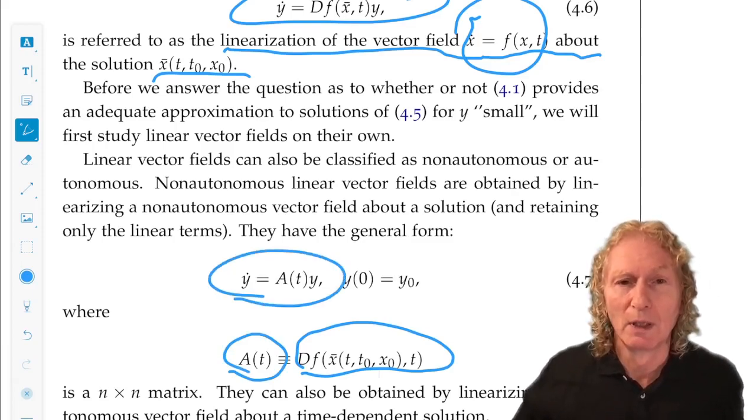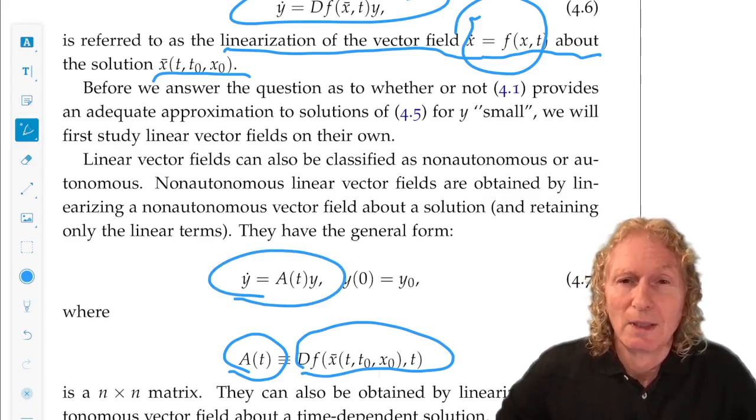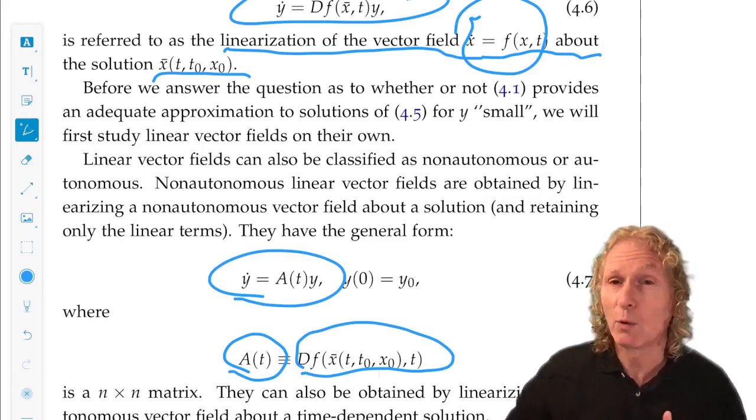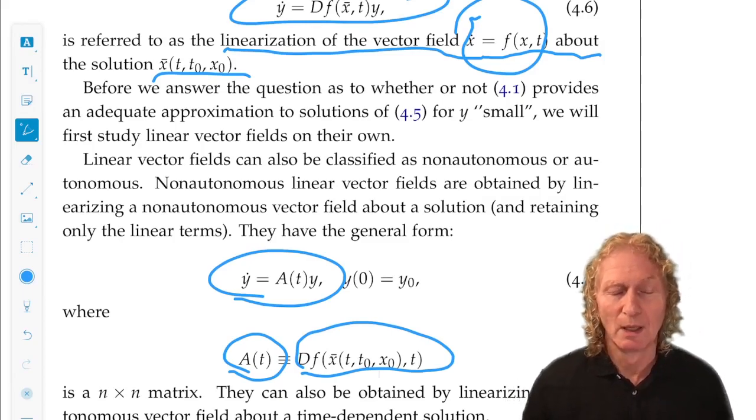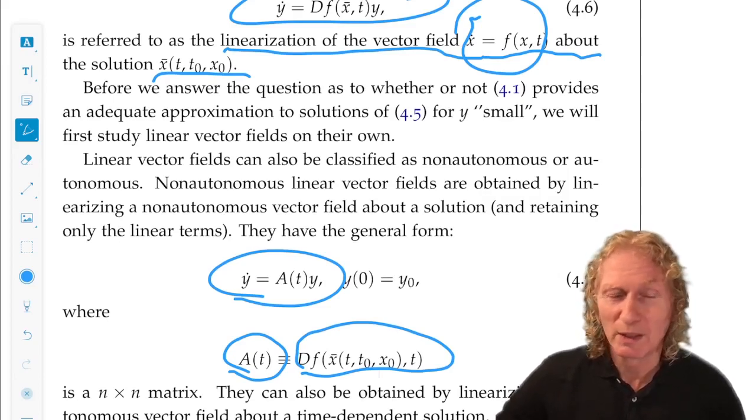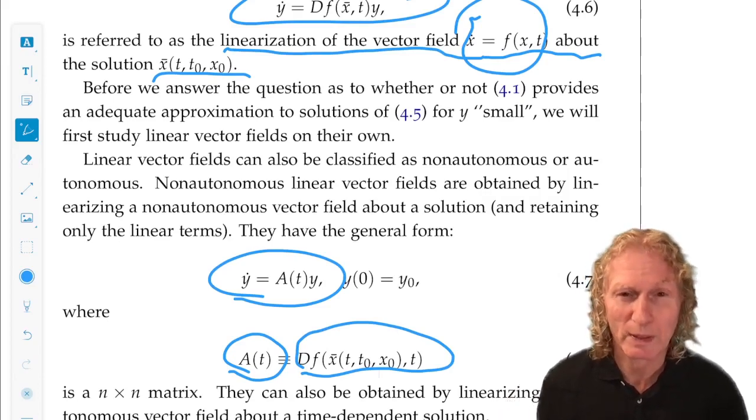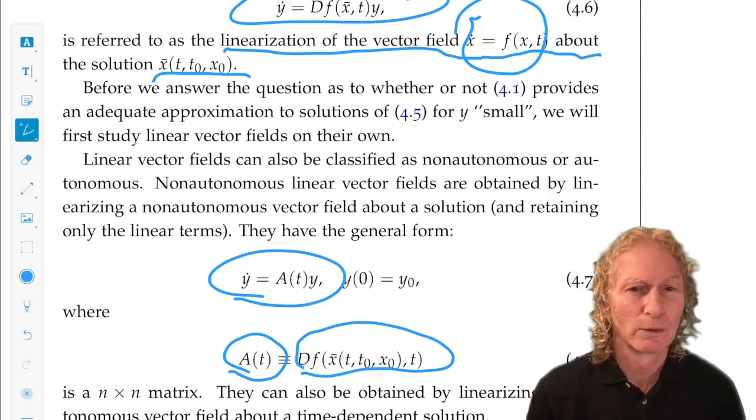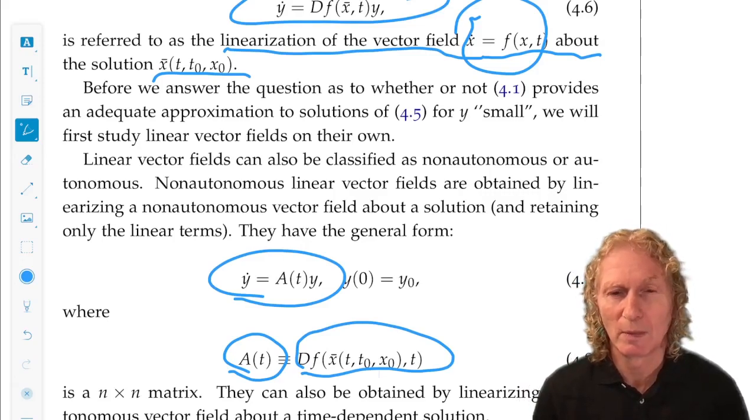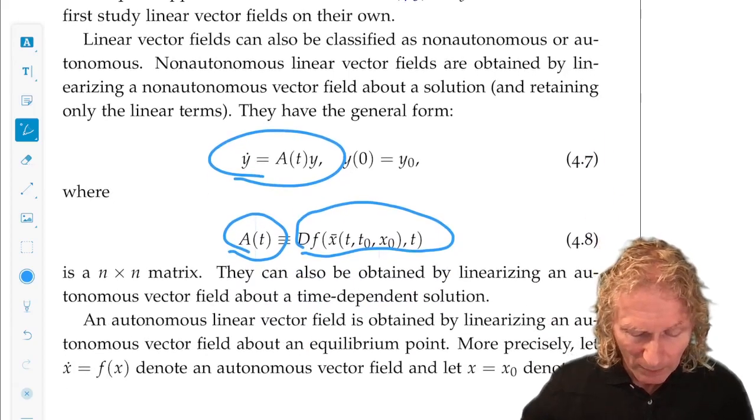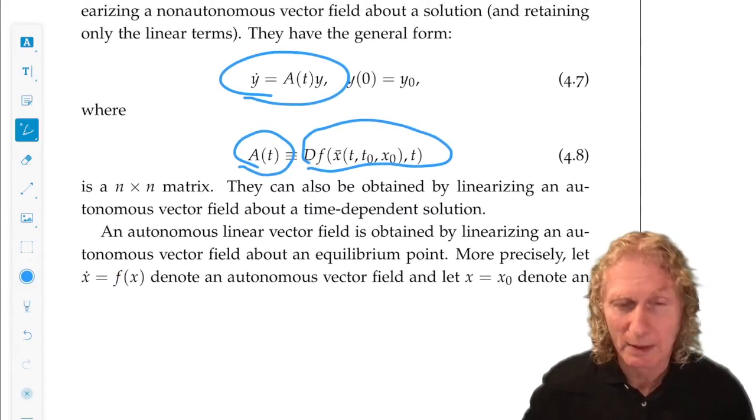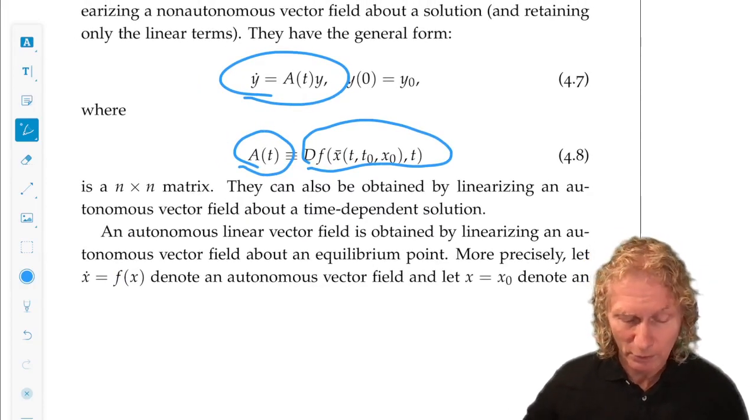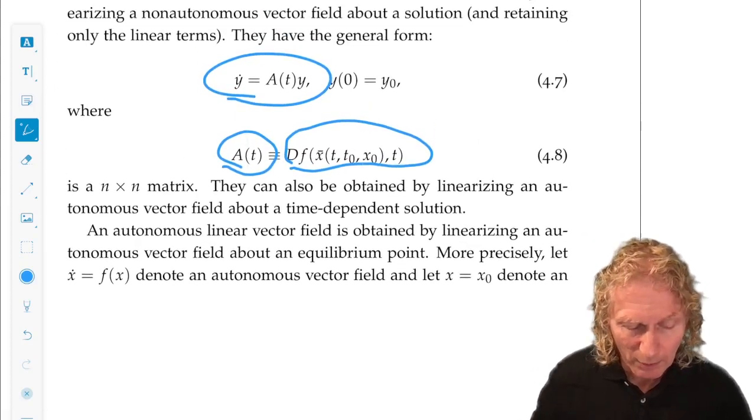Can we solve it? Sadly, no. In general, for an n-by-n system, n-by-n matrix with n bigger than 1, for n equal 1, we can solve it. Go to appendix B, and you'll see some examples of that. But in general, even for 2x2 matrices, we can't analytically solve this equation. So, we're not much better off than we were in the original, for the original X dot equals F of X, comma T, maybe.